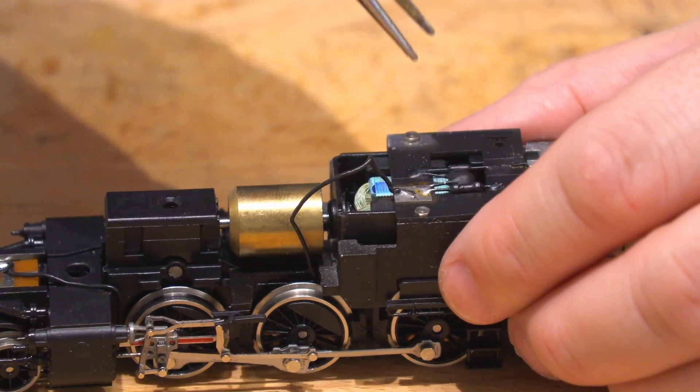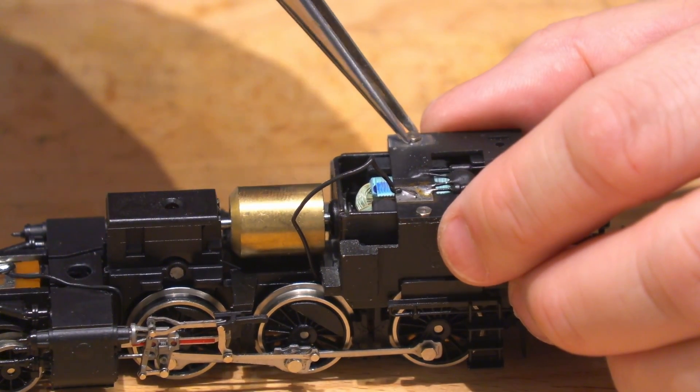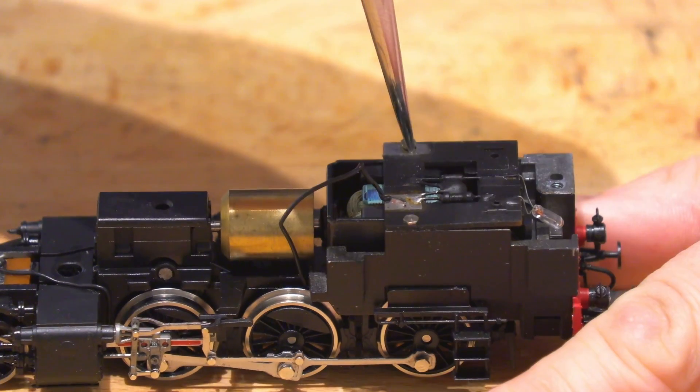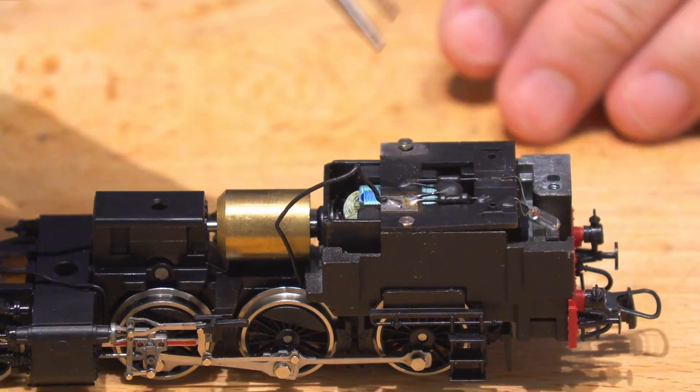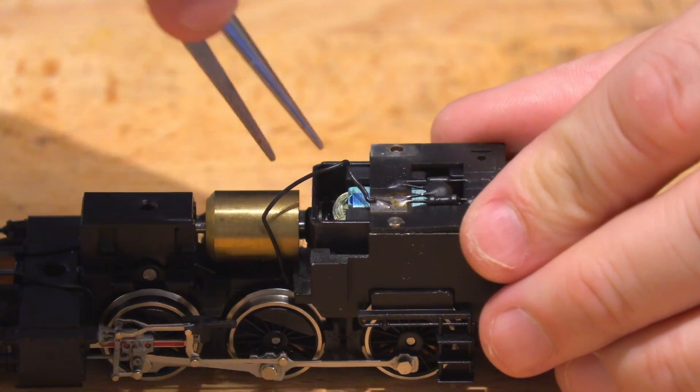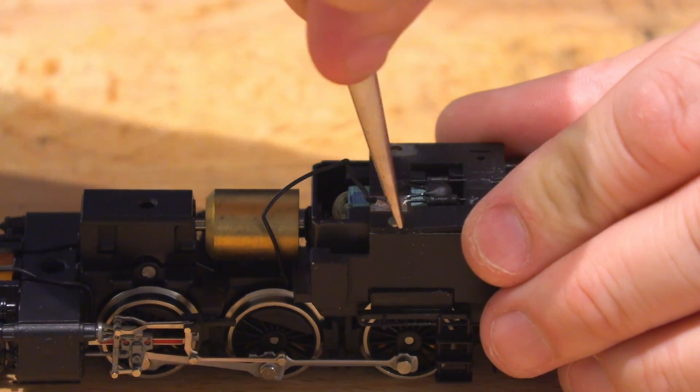Next comes the most important step of the whole conversion: isolating the motor. It was very common on older models for one of the motor's terminals to be connected directly to the chassis. Using this configuration would fry the decoder in a matter of seconds.